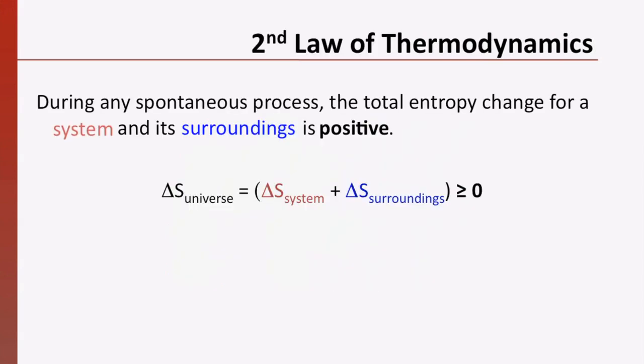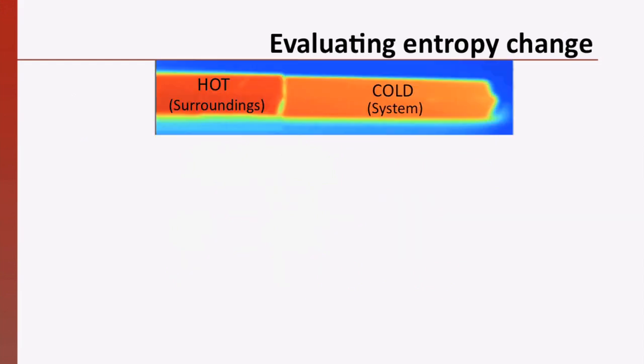Remember that the second law of thermodynamics states that during any spontaneous process, the total entropy change for a system and its surroundings is positive. When evaluating the entropy change, whether it is for the system or surroundings, delta S would be related to the change in the number of possible accessible microstates. Do you think that the entropy change for the surroundings, the hot bar, was positive, negative, or equal to zero? Do you think that the entropy change for the system, the cold bar, was positive, negative, or zero? Please pause the video here and discuss your reasoning with a classmate.